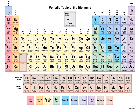Now let us understand the various blocks in slightly more detail. S block comprises group 1 and group 2. All elements of group 1 and 2 are metals except hydrogen. Group 1 elements are called alkali metals, and group 2 elements are called alkaline earth metals — they are generally found in the earth's crust in the form of their oxides and carbonates, hence the name alkaline earth metals.